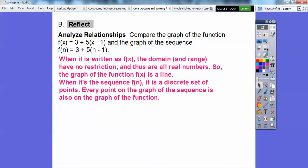It's a line if we connected all those dots. When it's a sequence, it's a discrete set of points. Discrete means they're just separate points. Every point on the graph of the sequence ends up being on the graph of the function. All of these points are on this line. This one's points, this one's a straight line because it's talking about all real numbers, f(x).